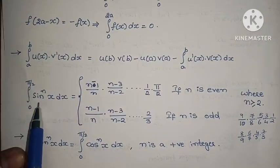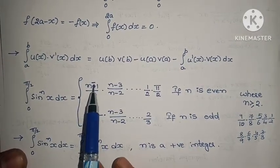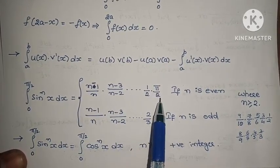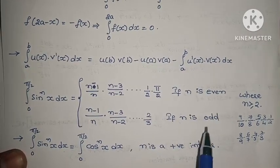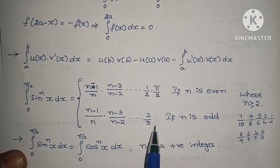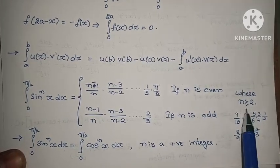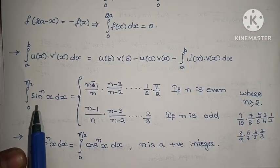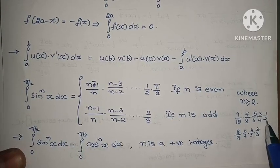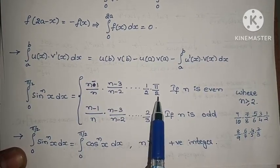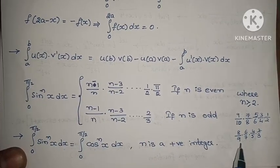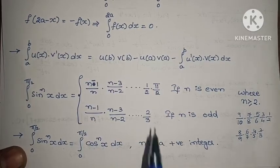Wallis formula: Integral 0 to pi/2 of sin^n x dx — the value is (n-1)/n times (n-3)/(n-2) and so on, times 1/2 times pi/2 when n is even (and n ≥ 2); or (n-1)/n times (n-3)/(n-2) and so on times 2/3 when n is odd. Example: if n equals 10 (even), multiply 9/10 times 7/8 times 5/6 times 3/4 times 1/2 times pi/2. If n is odd, multiply down to 2/3. Also, integral 0 to pi/2 of sin^n x dx equals integral 0 to pi/2 of cos^n x dx.